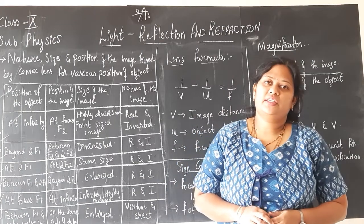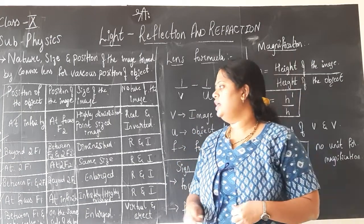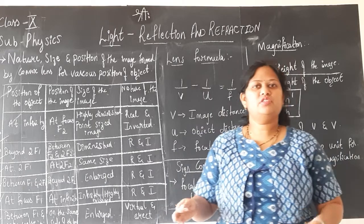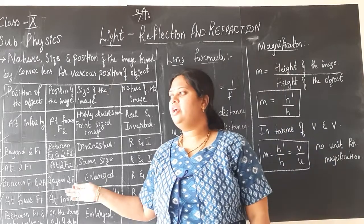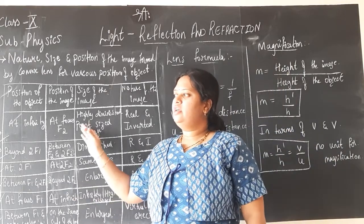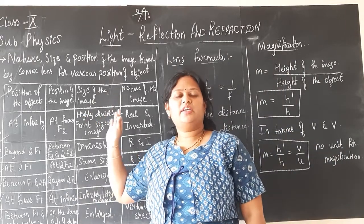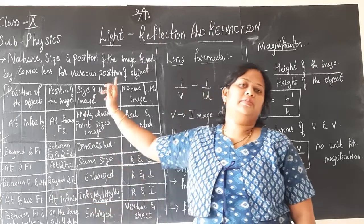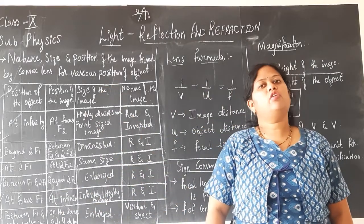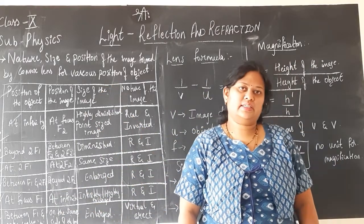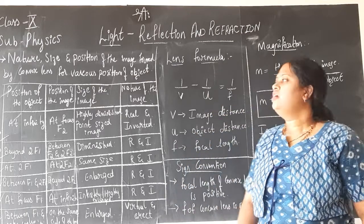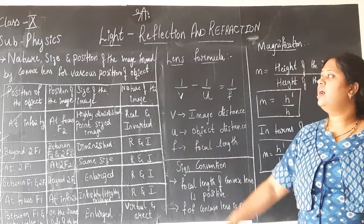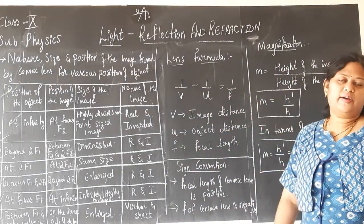In the previous session, we studied the ray diagram for the different positions of the object — the position of the image, the nature and size of the image with respect to the converging lens, that is the convex lens. In today's session, we shall learn a new formula called the lens formula.